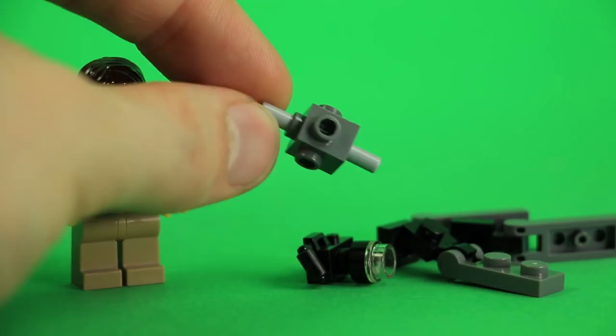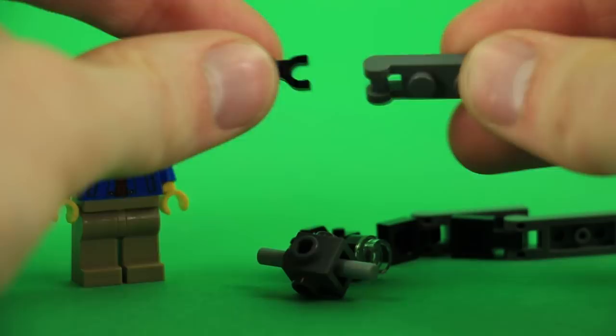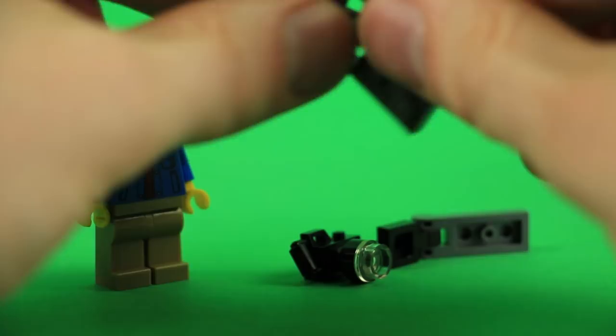And then each of the legs is just a black 1x1 plate with clip and a gray 1x2 plate with handle. I'm using dark gray, though light gray would also work kind of color scheme-wise. So three of those, since it is a tripod.